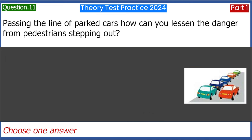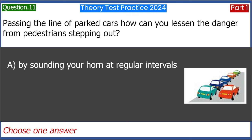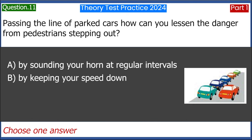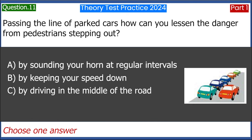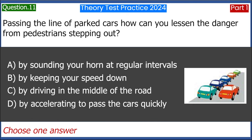Passing a line of parked cars — how can you lessen the danger from pedestrians stepping out? A. By sounding your horn at regular intervals. B. By keeping your speed down. C. By driving in the middle of the road. D. By accelerating to pass the cars quickly. Answer: B. By keeping your speed down.